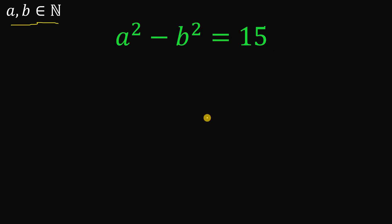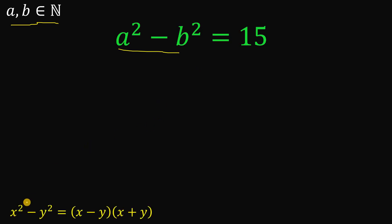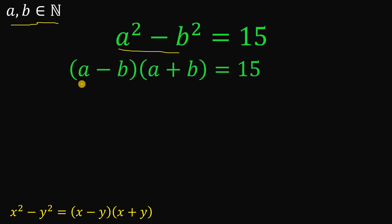To answer this question, on the left-hand side we have a squared minus b squared. We can use the difference of two squares: if we have x squared minus y squared, we can factor this as x minus y multiplied by x plus y. So the left-hand side of our equation becomes a minus b multiplied by a plus b equals 15.